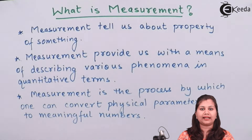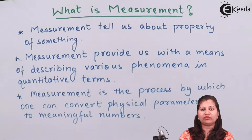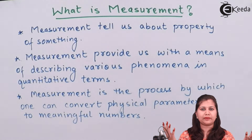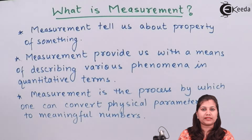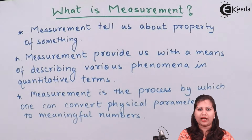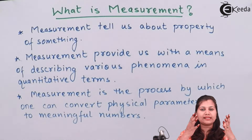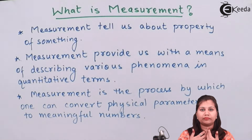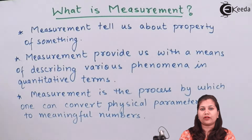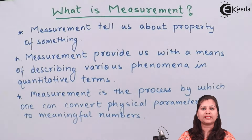There is a famous quote: whatever exists in nature, it exists in some amount. Like if air is present in the atmosphere, there is some amount of that air. If water is present in the sea, there is some amount of that water. So whatever exists in nature has some amount, and the calculation of that amount is called measurement.